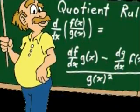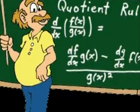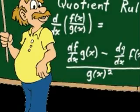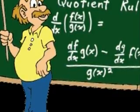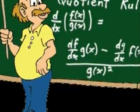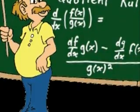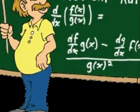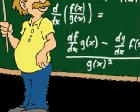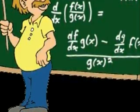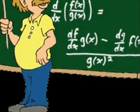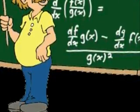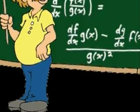So, to find the derivative of this function, you must first take the derivative of f of x times the original g of x, then subtract the derivative of g of x and multiply it by the original f of x. Now, this whole one equation subtracted by the other equation is the numerator, and then you will divide the numerator by g of x squared.